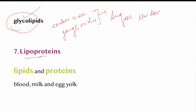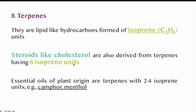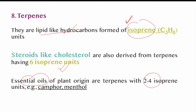Lipoproteins, as the name indicates, are composed of lipids and proteins; they are present in blood, milk, and egg yolk. Terpenes are lipid-like hydrocarbons formed of isoprene units. Steroids like cholesterol are also derived from terpenes, having six isoprene units. Essential oils of plant origin are terpenes with two to four isoprene units — examples include camphor and menthol.